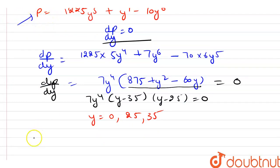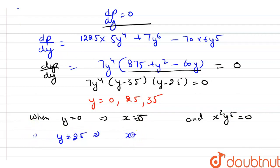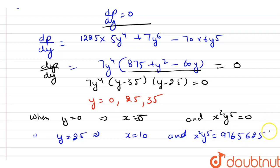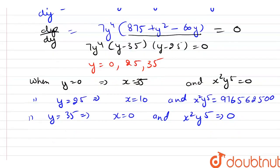Now we will find the values for each case. When y is equal to 0, then x is equal to 35, and x squared into y raised to power 5 is equal to 0. When y is equal to 25, then x will be equal to 10 and x squared into y raised to power 5 will be equal to a large positive number, approximately 9,765,625 times 100. When y is equal to 35, then x is 0, and x squared into y raised to power 5 will also be equal to 0.